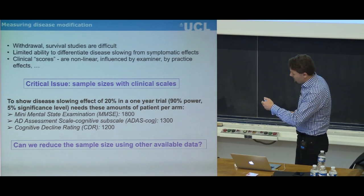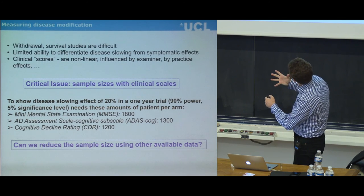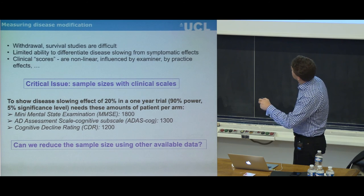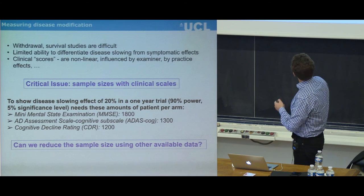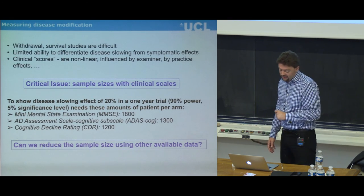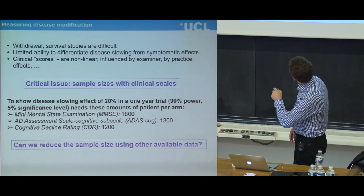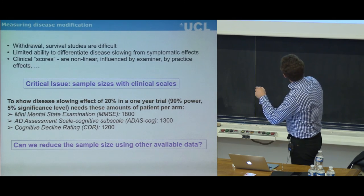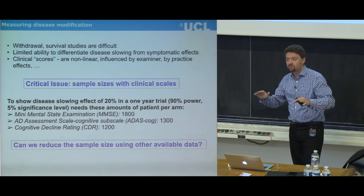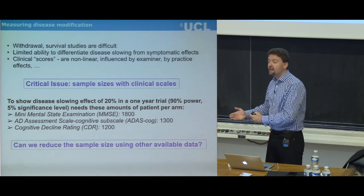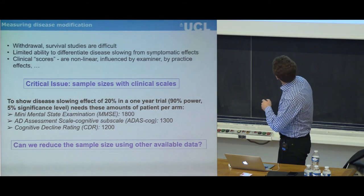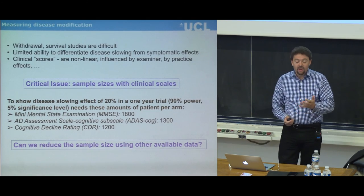For example, if you want to show a 20% disease-slowing effect in a one-year trial with given statistical power and significance — considering type 1 and type 2 errors — the numbers of patients required are huge: we're talking about 800 patients per arm, or 3,600 for two groups. That's quite an undertaking financially. The whole pharma industry and research community has been trying to do more research with less money. The whole concept of imaging biomarkers has been driven towards reducing these sample sizes.